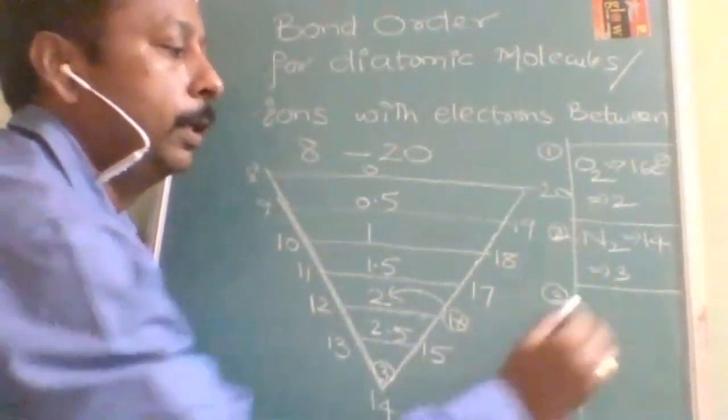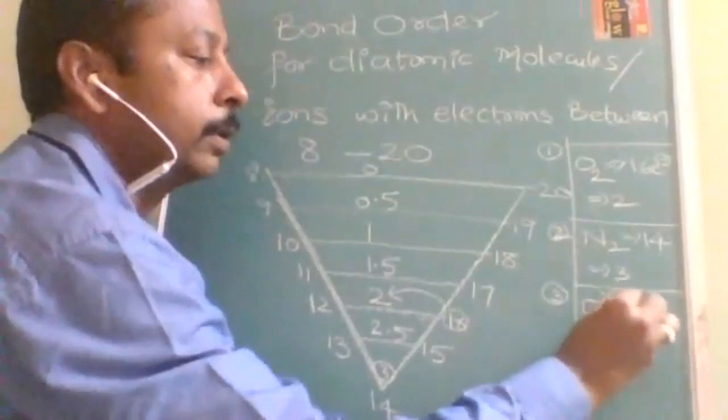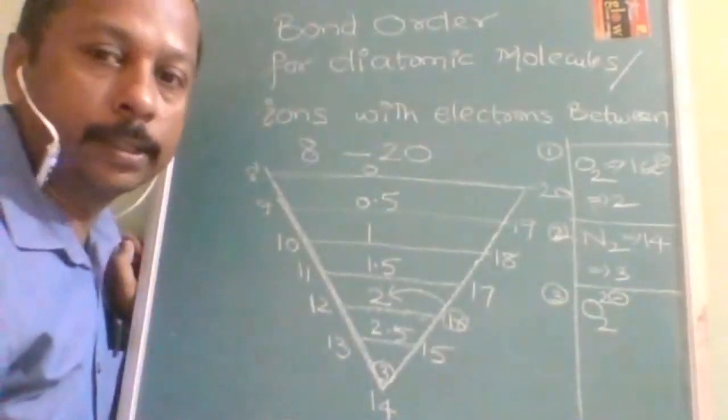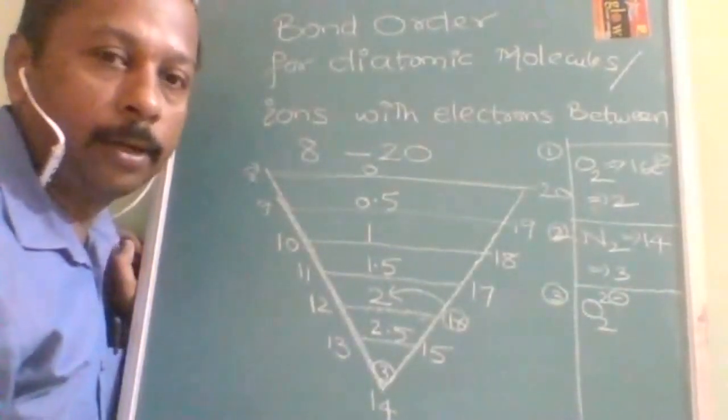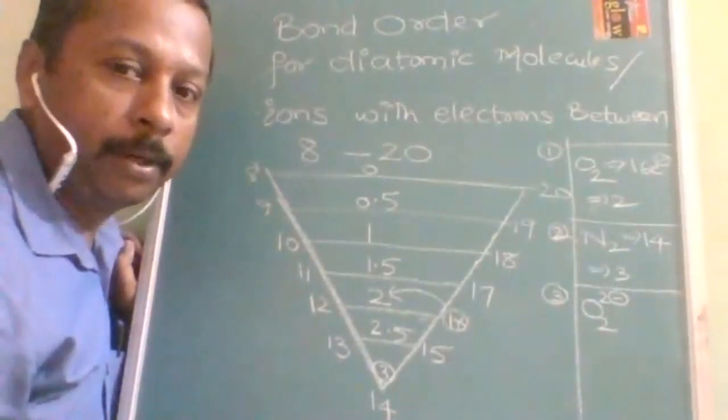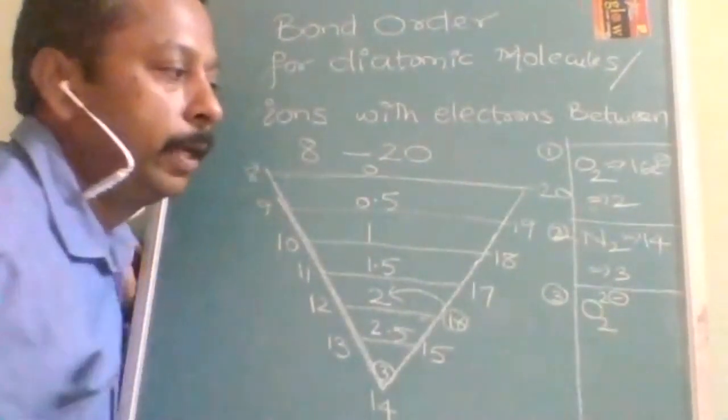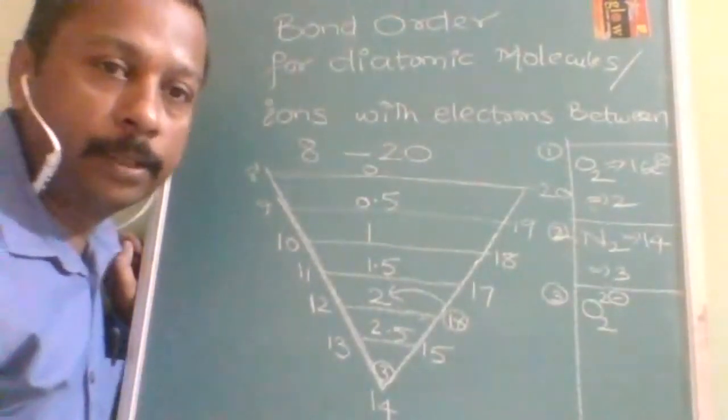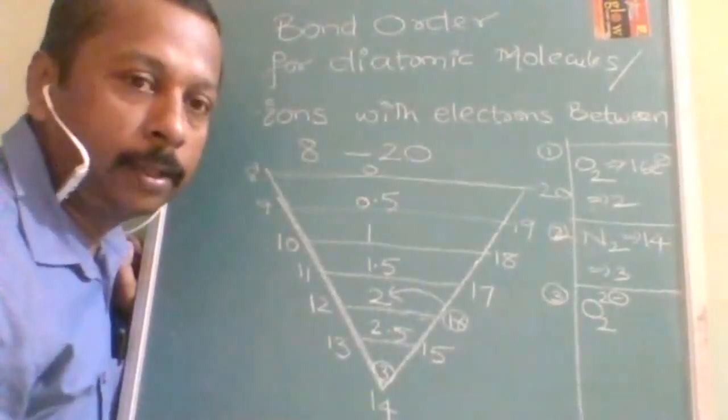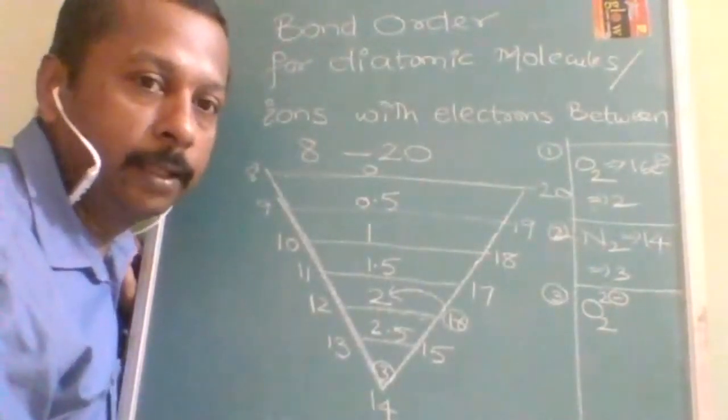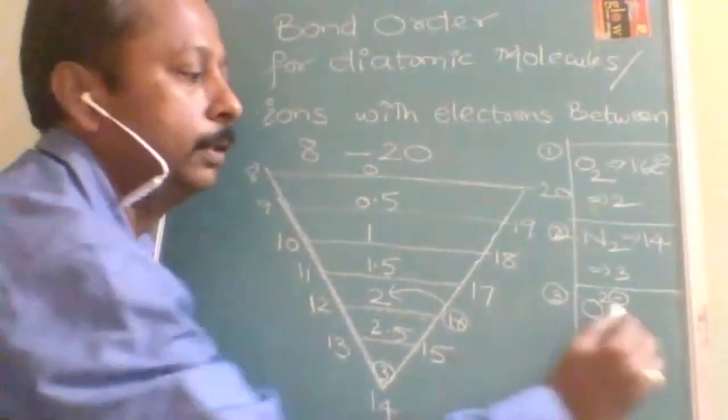OK, now see, let us take O2 2 minus. This is called as what? Peroxide. What it is called as? Peroxide. OK, so in the peroxide. Everybody knows that bond order must be how much? 1. OK, peroxide linkage means 1 bond between the 2 atoms, oxygen atoms.